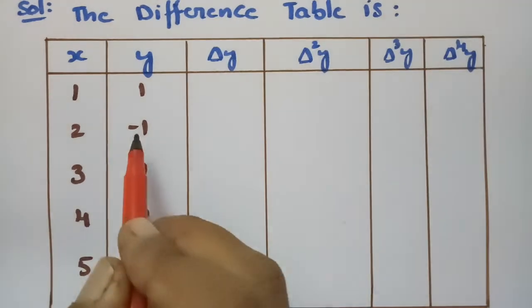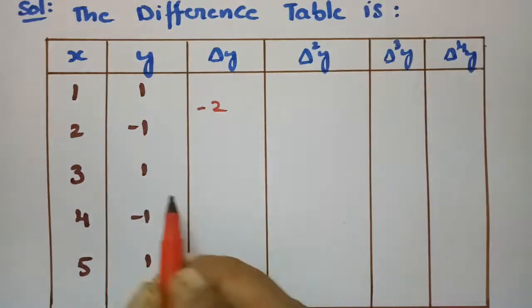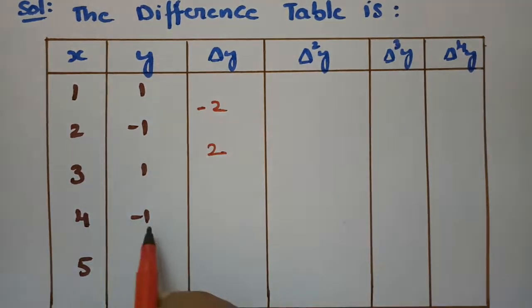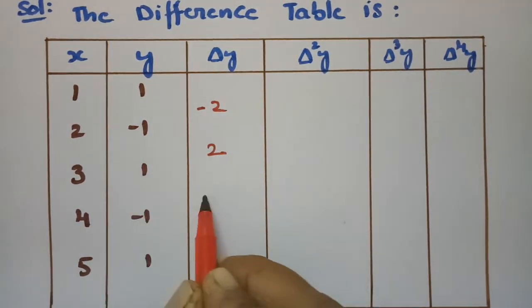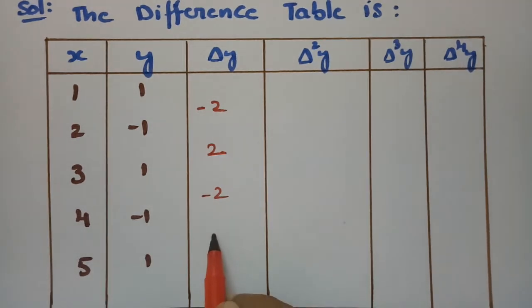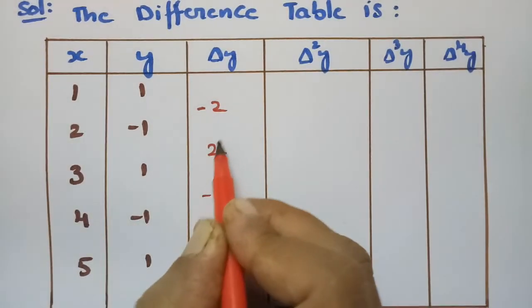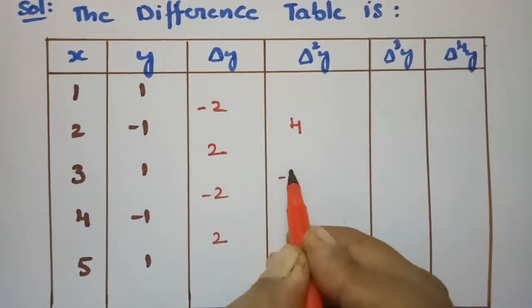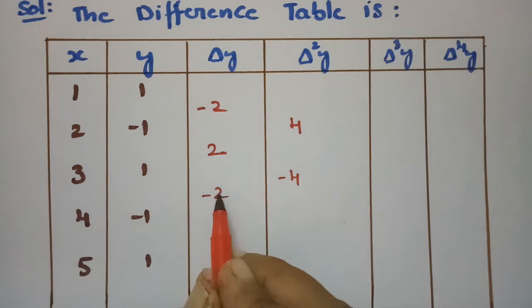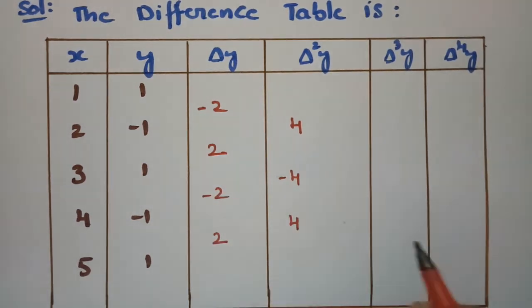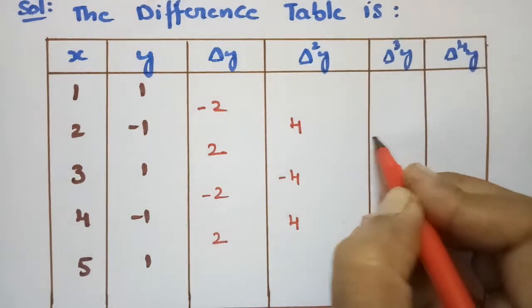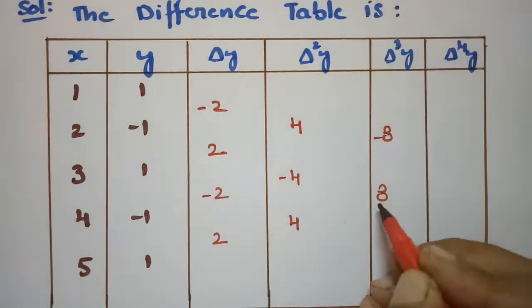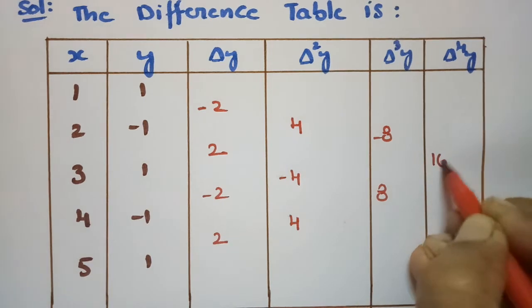First of all, while creating: minus 1 minus 1, so this will be minus 2. Then 1 minus of minus is plus, so this will be plus 2. Minus 1 minus 1 is minus 2, and 1 minus of minus 2 is 4. Then minus 2 minus 2 is minus 4; 2 plus 2 is 4. Minus 4 minus 4 is minus 8; 4 plus 4 is 8. Then 8 minus of minus gives 16.